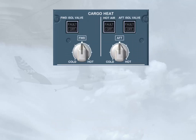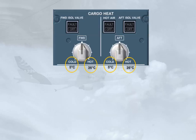The normal operation of the cargo conditioning system only requires the following pilot inputs: confirm that the push-button switches are in their normal lights-out position and set the required temperatures. Note: the mid-position of the temperature selector is approximately 15 degrees Celsius.